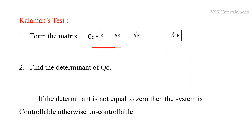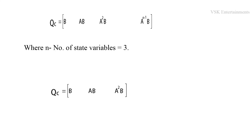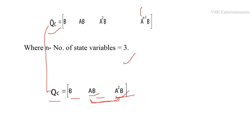With n = 3, the controllability test matrix formula becomes QC = [B, AB, A²B]. We need to determine AB and A²B, then substitute them into QC. After finding QC, we will determine its determinant to conclude whether the system is controllable or not.